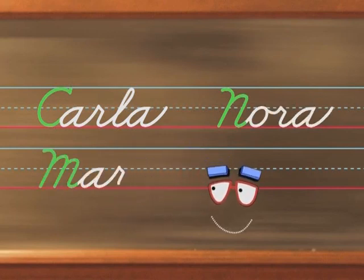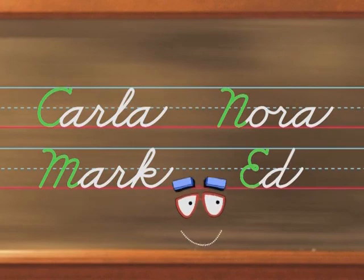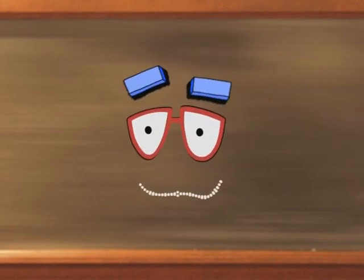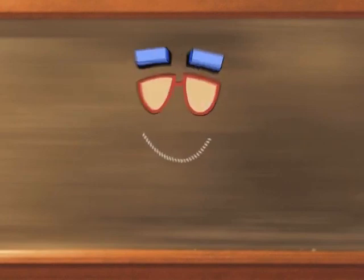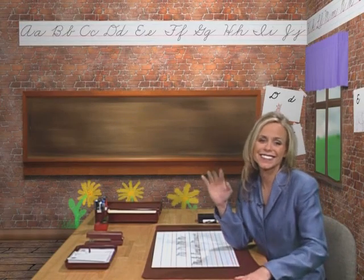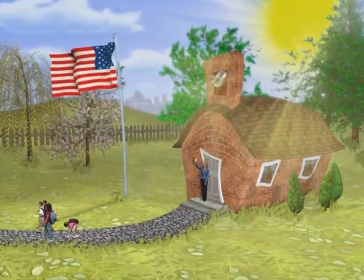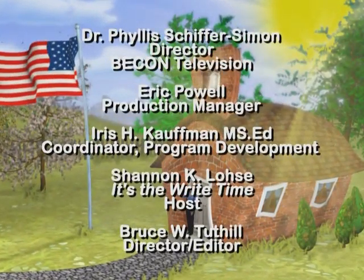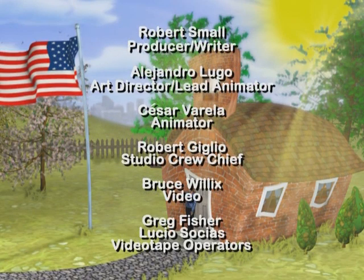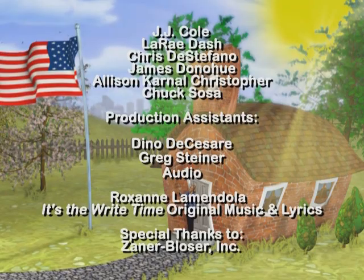I'm going to practice writing with my nieces Carla and Nora and my brother Mark. And I have to call Ed. You do that. But first, say goodbye to everyone. Bye. You can come over to our place and practice. There's plenty of room. See you soon. Bye-bye. I have so many words to say. It's the right time. The right time. It's the right time. Loops, dots, and lines, I feel just fine. Let's write the time away. It's the right time. Bye-bye.